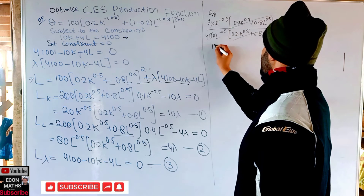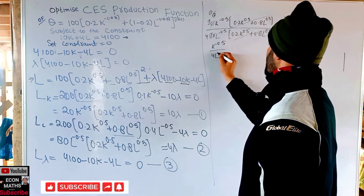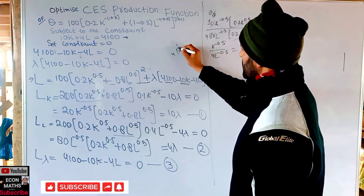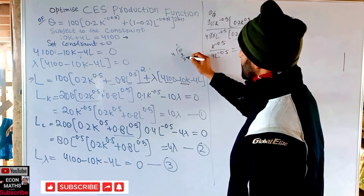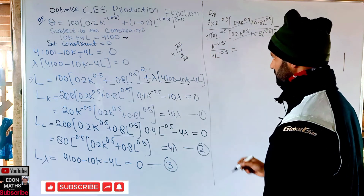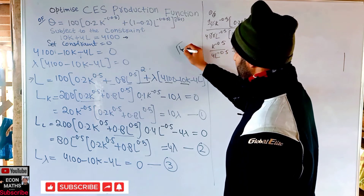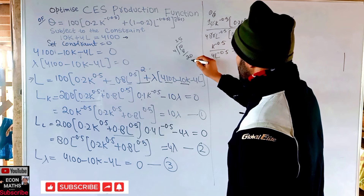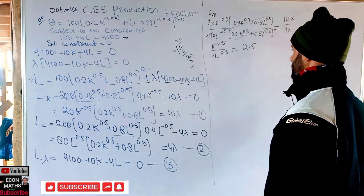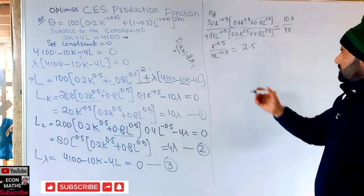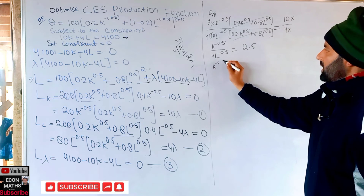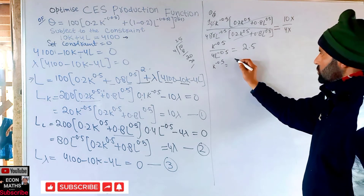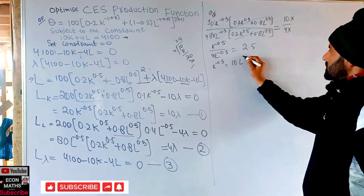After cancellation we are left with: K^(−0.5) / (4 L^(−0.5)) = 2.5. Transposing the 4 to the right-hand side: K^(−0.5) = 2.5 × 4 × L^(−0.5) = 10 L^(−0.5).